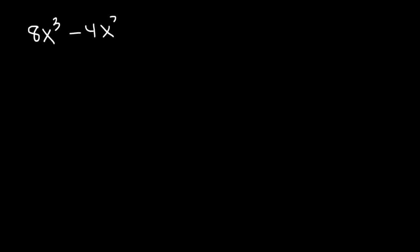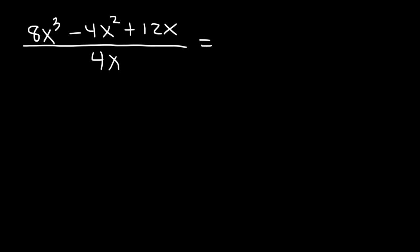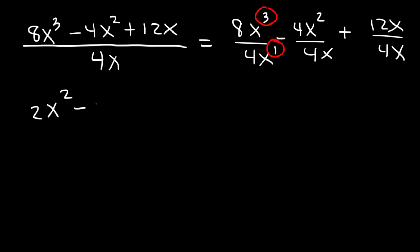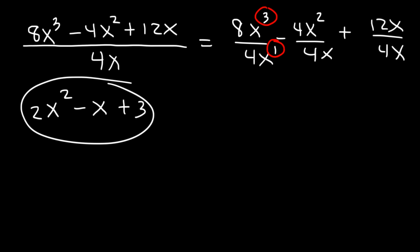Now let's say we have the polynomial 8x cubed minus 4x squared plus 12x — a polynomial is simply an expression with many terms — and we're dividing it by the monomial 4x. Whenever you divide by a monomial, you can separate the fraction into separate fractions and divide every term on top by 4x. 8x cubed divided by 4x: 8 divided by 4 is 2 and x cubed divided by x is x squared, giving 2x squared. Negative 4x squared divided by 4x is negative x. And 12x divided by 4x is 3. So the answer is 2x squared minus x plus 3.